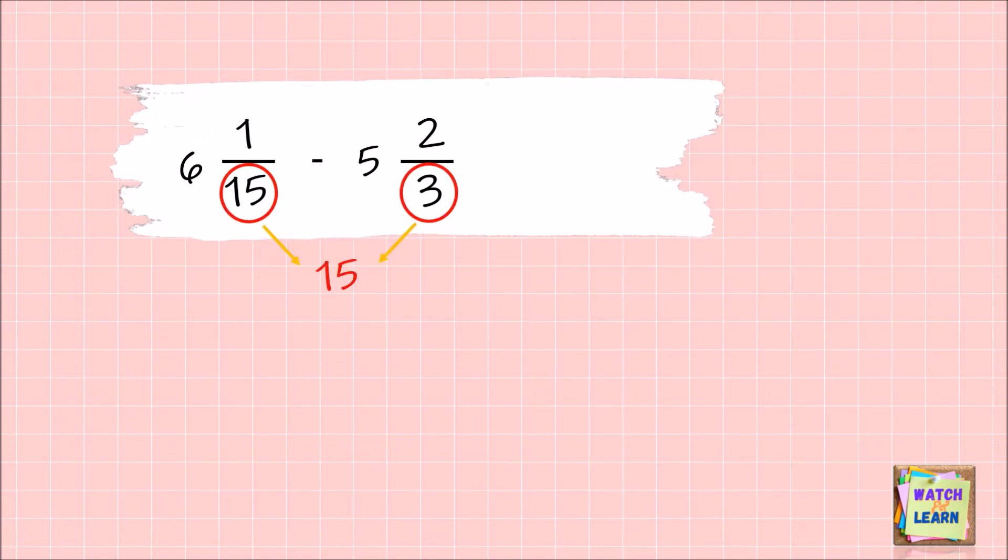If you want to know how I got 15 as LCM or LCD, you can check my other video about this. Now let's continue. Start by copying the whole number, then rewrite the fractions using our LCM or LCD. Divide the LCM by the denominator and multiply the answer by the numerator.